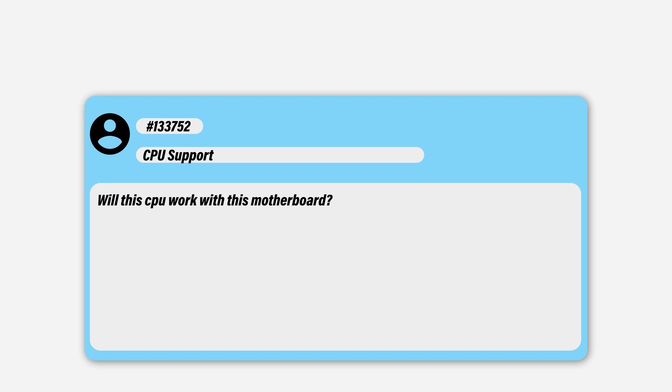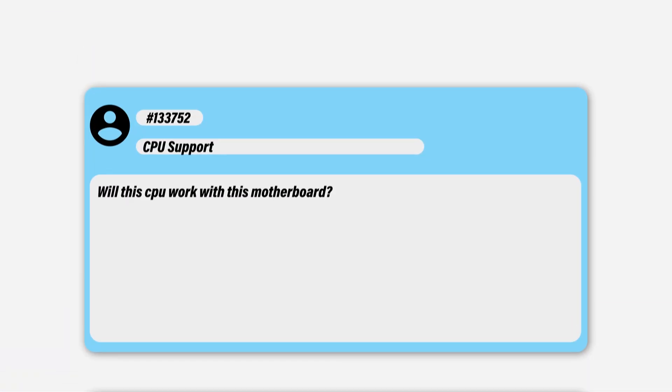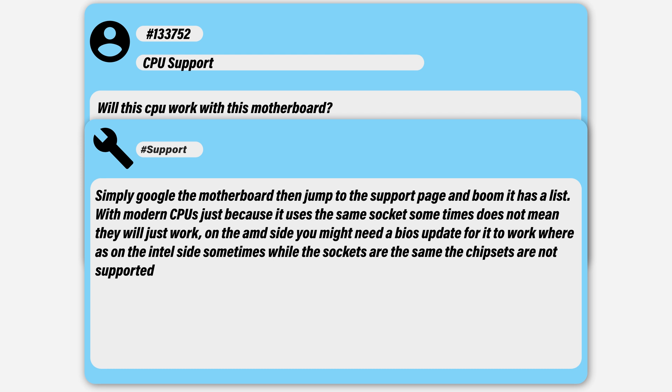Next question: will this CPU work with this motherboard? If I had a dollar for every time this question was asked, especially on my motherboard videos, I could buy like all the Extreme Edition Intel CPUs or all the AMD chips. It's a really easy question to answer though — all you need to do is simply Google the motherboard, jump onto the support page, and it has a list of validated CPUs. With most modern CPUs, just because it fits into the socket doesn't always mean it will work on the chipset.